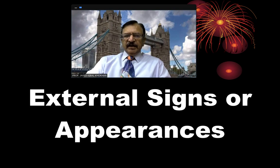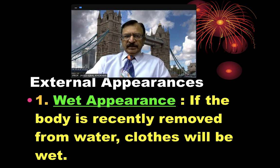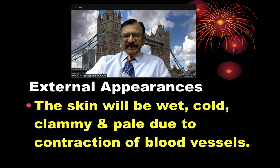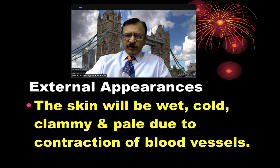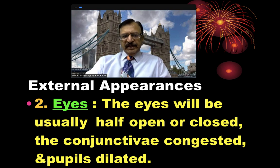In this lecture, I will be discussing the external signs or external appearances. Number one: wet appearance. If the body is freshly recovered from the water, the clothes will be wet, the skin will be wet, cold, clammy and pale due to contraction of the blood vessels. The eyes will be usually half-open or closed, the conjunctivae are congested and the pupils are dilated.